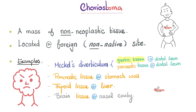What does non-native site mean? Growth of stomach tissue in the intestine, or pancreatic tissue in the intestine, or pancreatic tissue in the wall of the stomach, or thyroid tissue in the liver, or brain tissue in the nasal cavity — that's a choristoma.